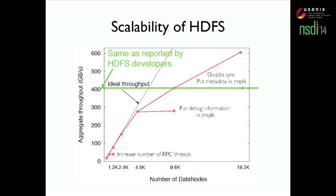HDFS is a typical sharding system with a single metadata service called the name node, usually believed to be the bottleneck, plus a large number of data nodes. We apply emulation to all data nodes and run the name node in real mode. In this scalability graph, the x-axis is the number of emulated data nodes — we achieved a collocation ratio of 1 to 100, so the 9.6k experiment needed only 96 physical machines — and the y-axis is aggregate throughput in gigabytes per second. I also draw an ideal throughput line showing perfectly linear scaling.